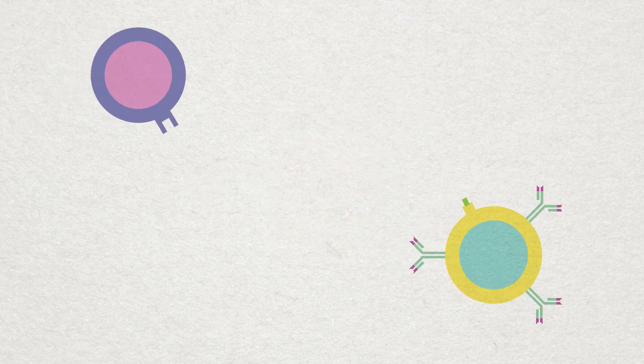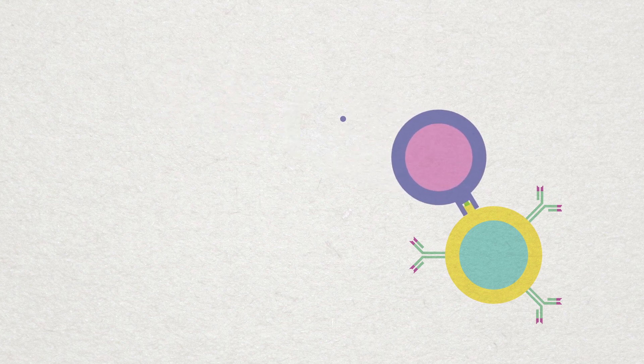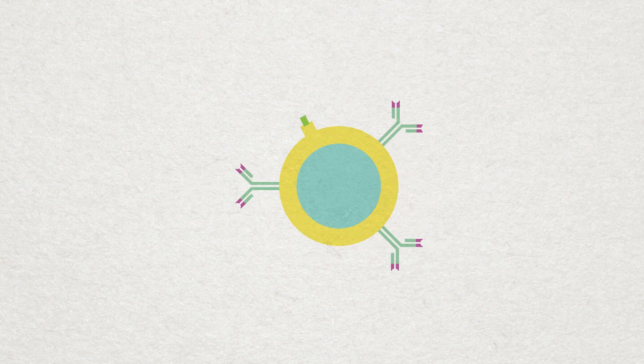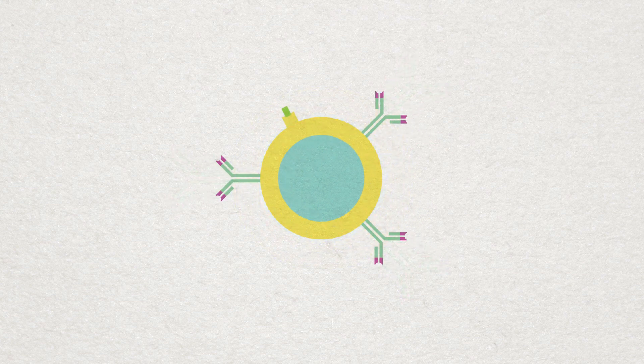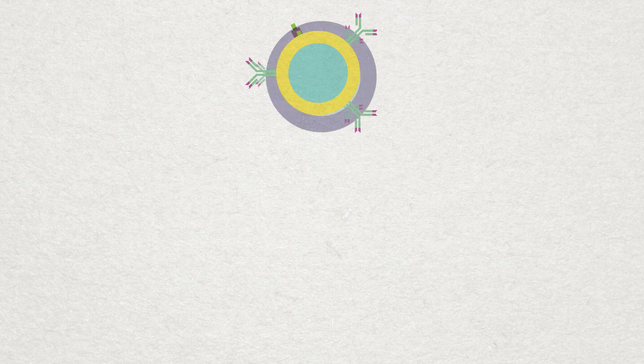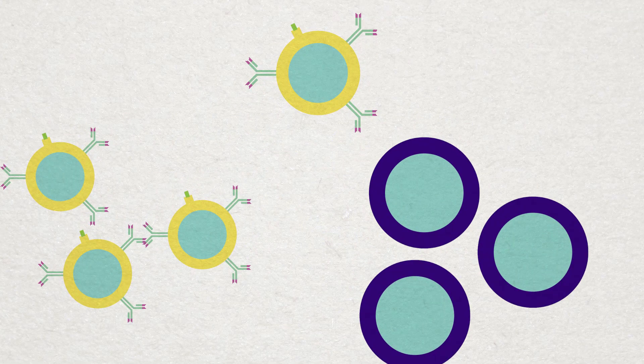Helper T-cells recognise the antigen MH2 complex and come along and deliver the co-stimulation needed for the B-cell to proliferate and differentiate. With this help, the B-cell becomes active and starts to clone and form specialised cells called memory B-cells and effector B-cells.